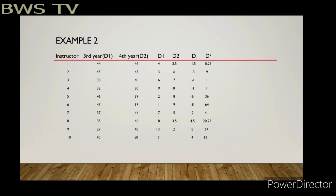In our second example, the columns are: instructor, third year, fourth year, D1, D2, D, and D squared. There are 10 variables, so we can use the t-test formula later. Since the scores haven't been ranked yet, we made separate tables for D1 and D2 to rank them first. After ranking, we get D and D squared.